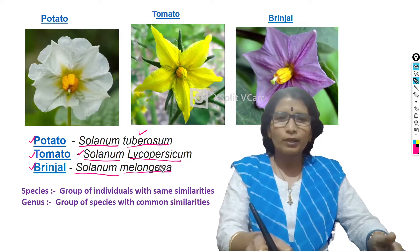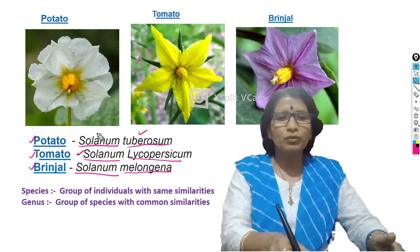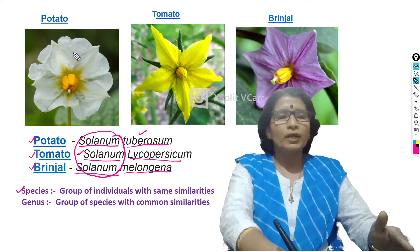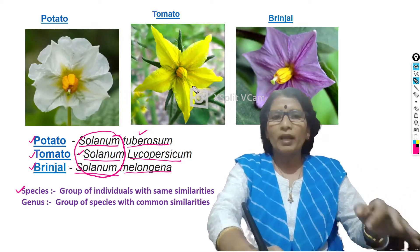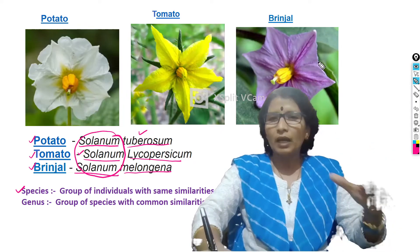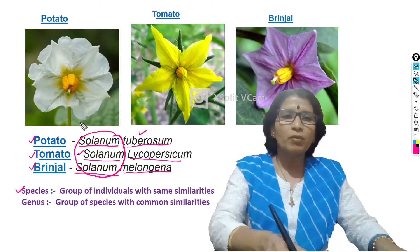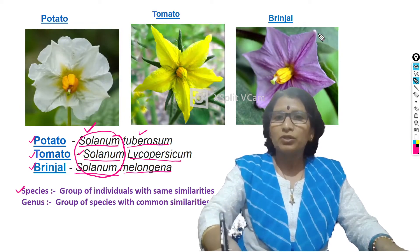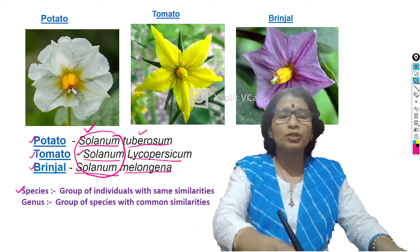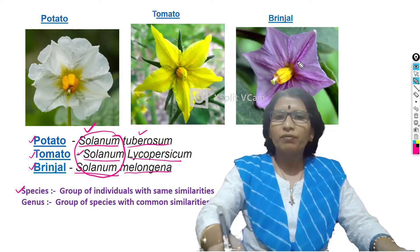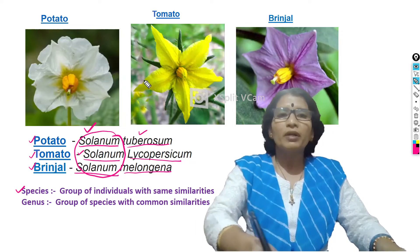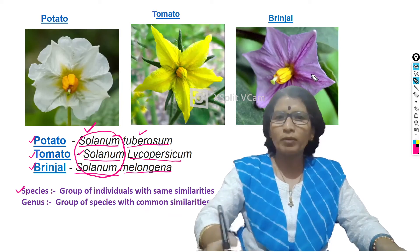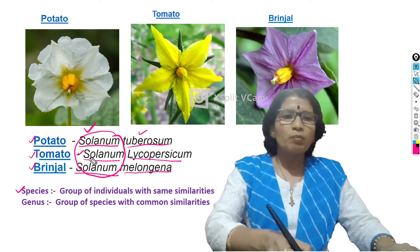You can see that the species names — tuberosum, lycopersicum, and melongena — are all different. But when we look at the genus, all three plants share the same word: Solanum. Why? Species means a group of individuals with the same similarity — all potato plants come under one species, all tomato plants under another, and all brinjal plants under another. But all three different species come under one single genus because if you observe the flower structure of potato, tomato, and brinjal, the petal color is different, but the structure, number of petals, sepals, stamens, and their arrangement are all similar to each other. That is why these three different species come under one single genus, Solanum.